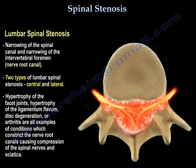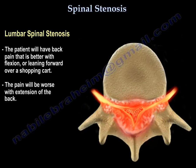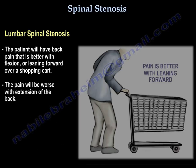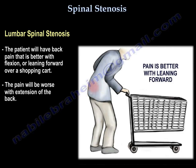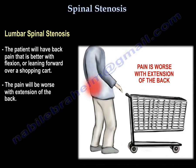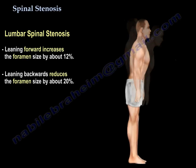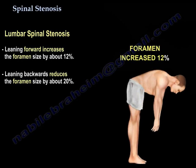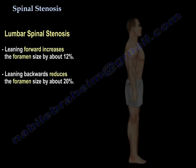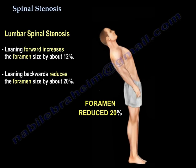Spinal stenosis causes compression of the nerve root. Back pain is better with flexion because it opens the foramen — this is the shopping cart sign. It's worse with extension. When you lean forward, you increase the foramen size by 12%. When you lean backwards, you reduce the size of the foramen by about 20%.